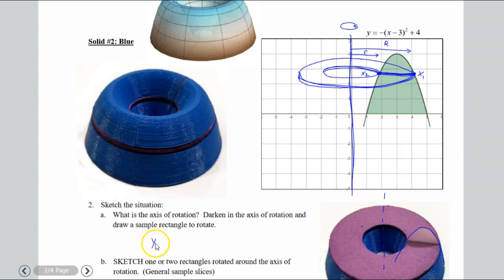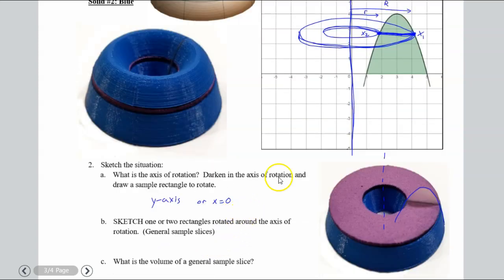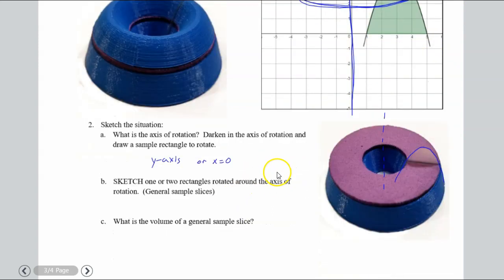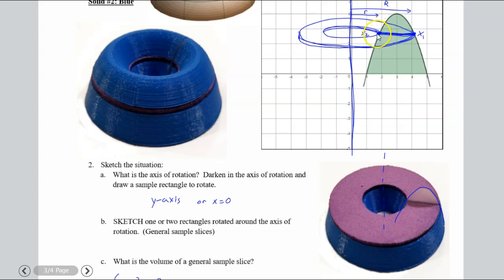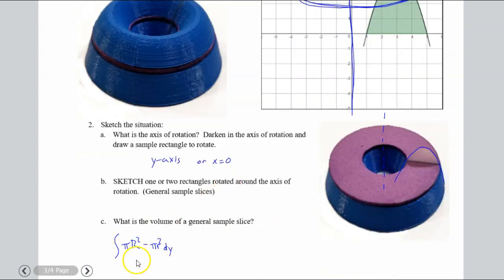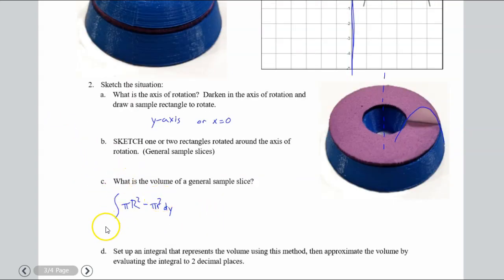So what is the axis of rotation? Well it's going to be Y axis or the line X is zero here in equations. Sketch a sample, we already did that. And then what is the volume of that sample? So I'm going to put in for now, this pi times big R squared minus pi times little r squared, and then times this small thickness, in this case, dy. So this is our small vertical thickness in this washer. So it's going to be a dy in this case, which means we need everything in terms of Y.